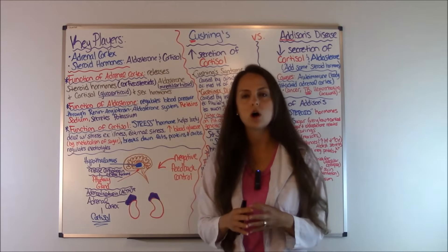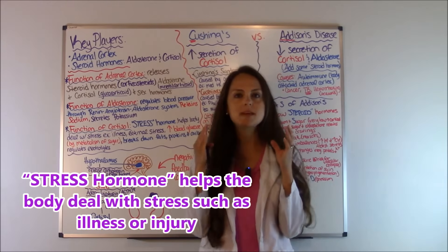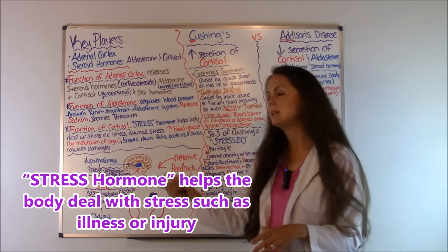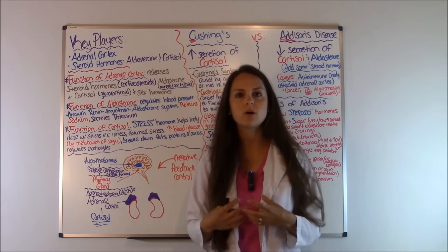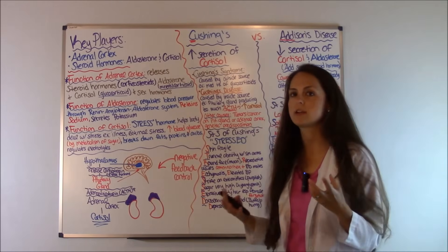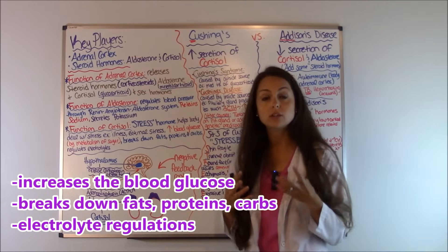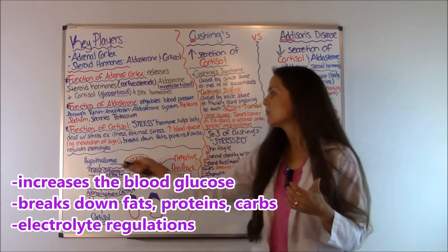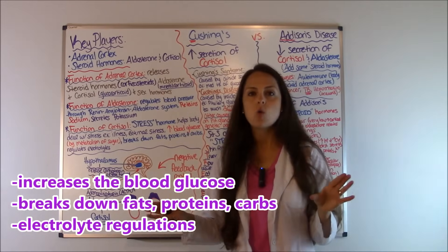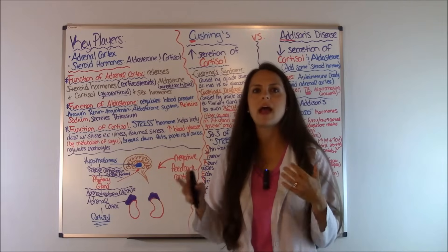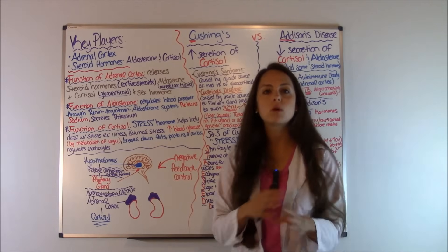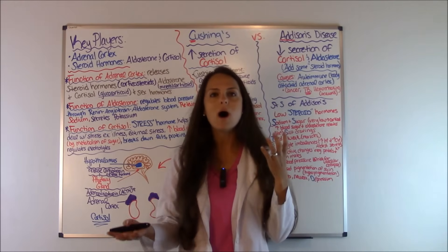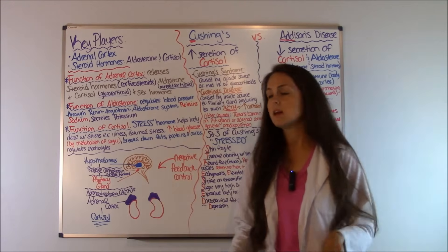Cortisol is known as the stress hormone — commit that to memory. Whenever you get stressed, your body releases cortisol to help deal with stress, whether from illness or external stress. It also increases blood glucose by metabolizing sugars you eat, and it breaks down fats, proteins, and carbs, and regulates electrolytes. If you have too high cortisol levels, you're going to have very high blood sugars and elevated glucose.